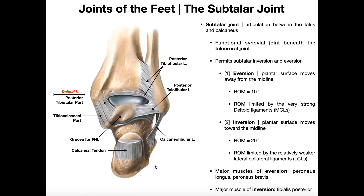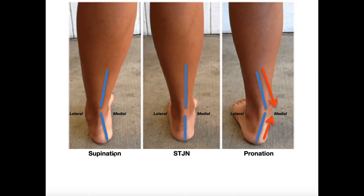If you look at the plantar surface of your foot — the bottom of your foot — and you angle that medially, you're inverting the foot. If you angle that laterally, you're everting the foot. When considering the subtalar joint, it's nice to think about eversion and inversion. However, at some point I need to start thinking about composite movements of the subtalar joint. In order to do that, I need to look at supination and pronation.